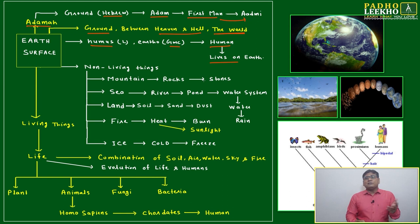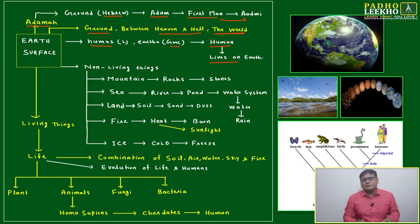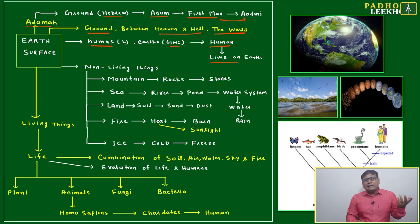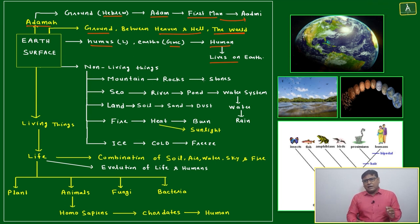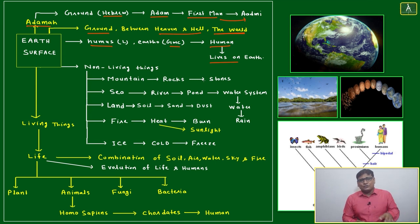The second thing we are seeing about living things is how life has come. Life has come based on the five elements — panch bhuta tattva — the correct combination of soil, air, water, sky, and fire. Based on that, we will try to understand scientifically the evolution of life, both biologically and ecologically.